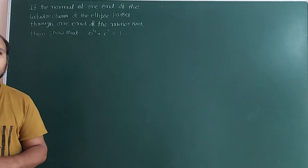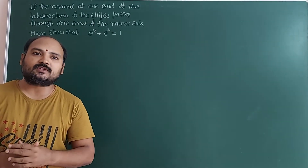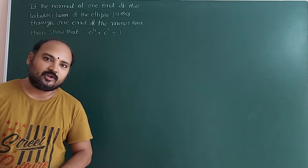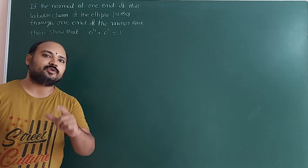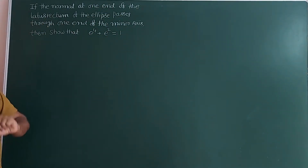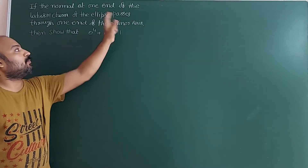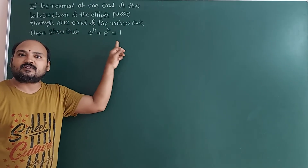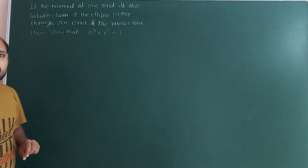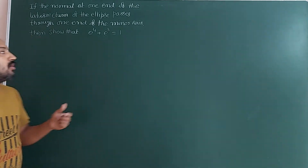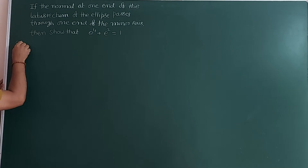Hi dear students, from now onwards every two questions I will make one video regarding ellipse examples. One of the students requested this in our channel, so let us have a discussion. The important question in this video: if the normal at one end of the latus rectum of the ellipse passes through one end of the minor axis, then show that e⁴ + e² = 1. They are asking us to prove this result, which will also help in competitive exams.